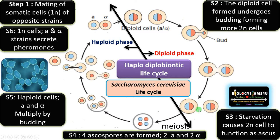When there is food shortage, this diploid cell functions as an ascus. The diploid nucleus undergoes meiosis, forming four haploid ascospores inside the ascus — two of the A strain and two of the alpha strain. On maturity, the ascus wall breaks.